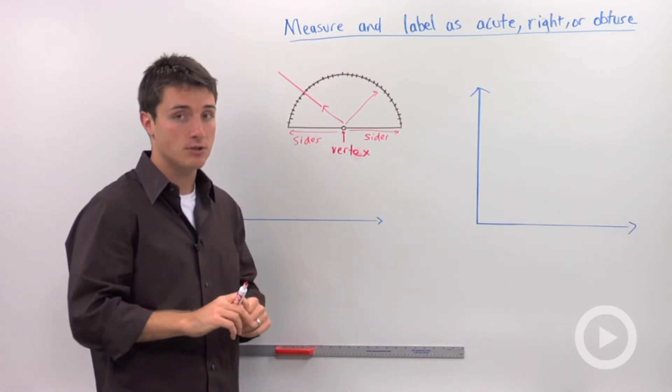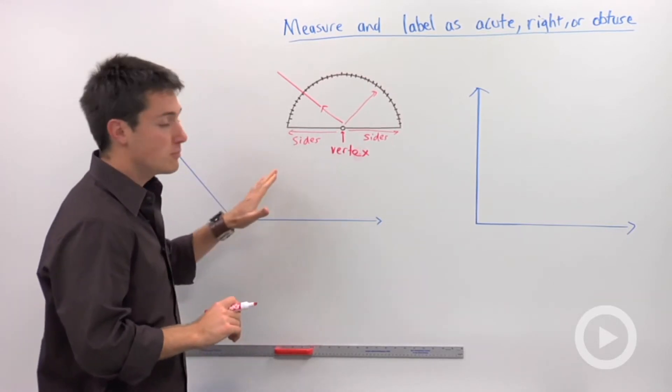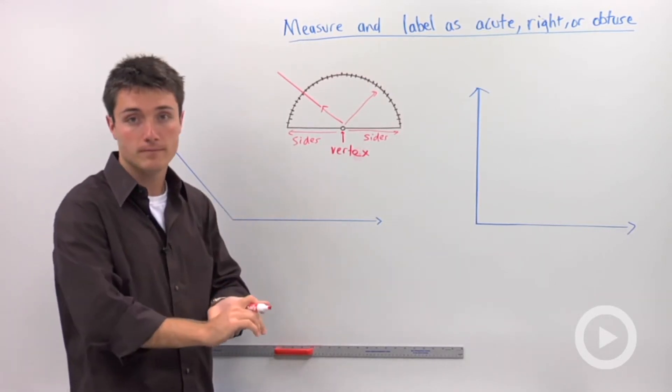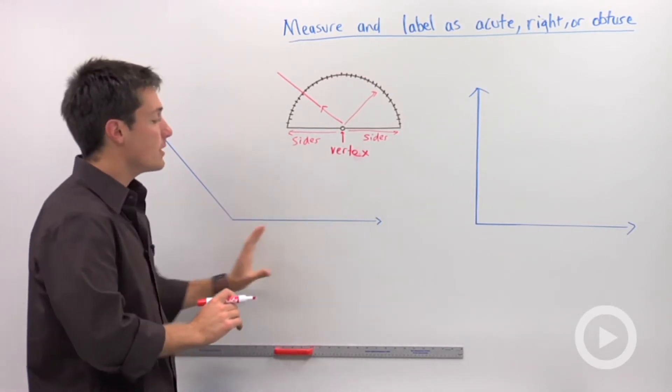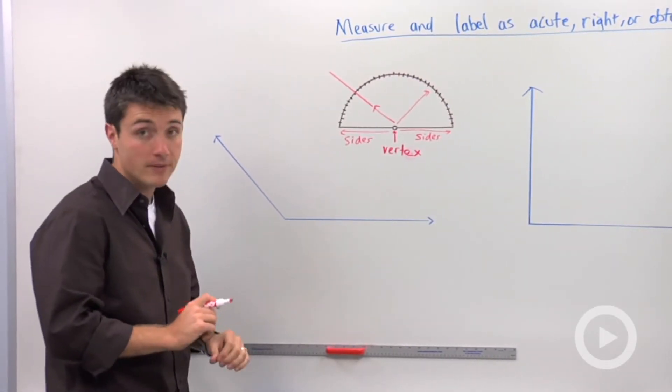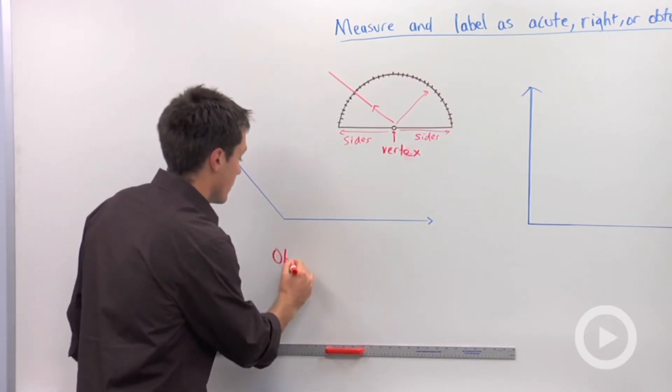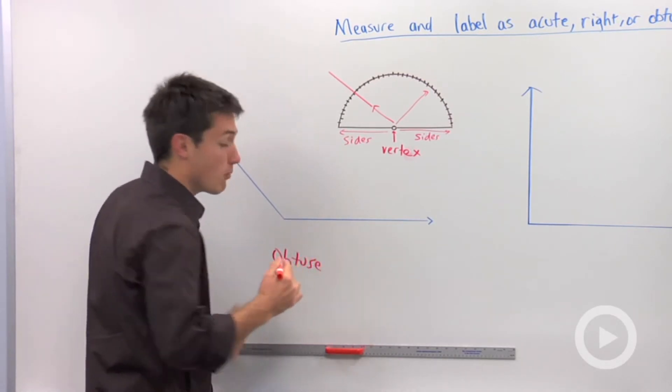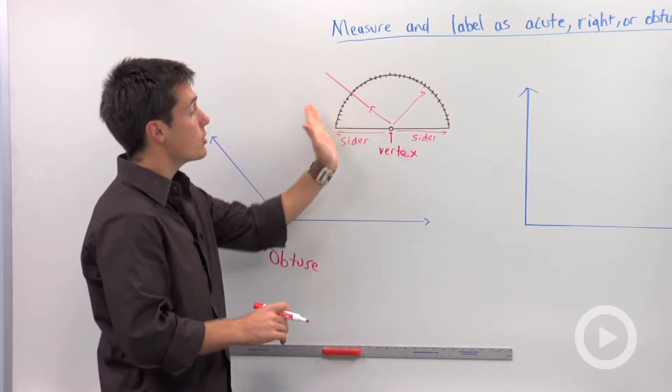Now the last key thing that you need to take in mind is obtuse, acute, or right. Before you even measure an angle, kind of eyeball it and make a guess. If you look at this angle right here, it's pretty clear that this is going to be obtuse. It's more than 90 degrees. So when you're going to use these measures, there's always going to be two numbers.